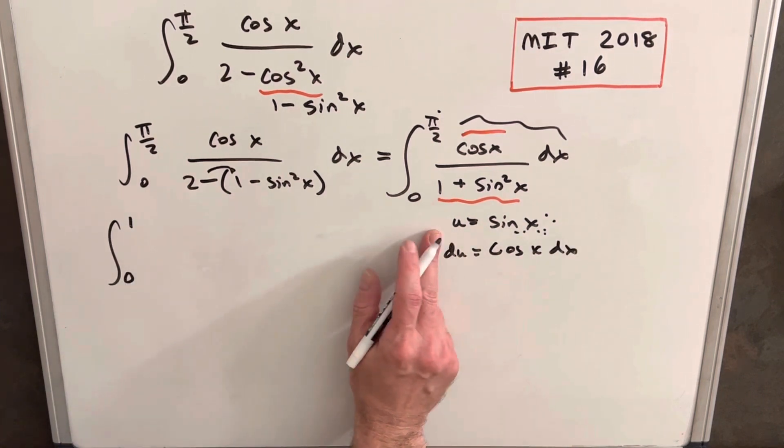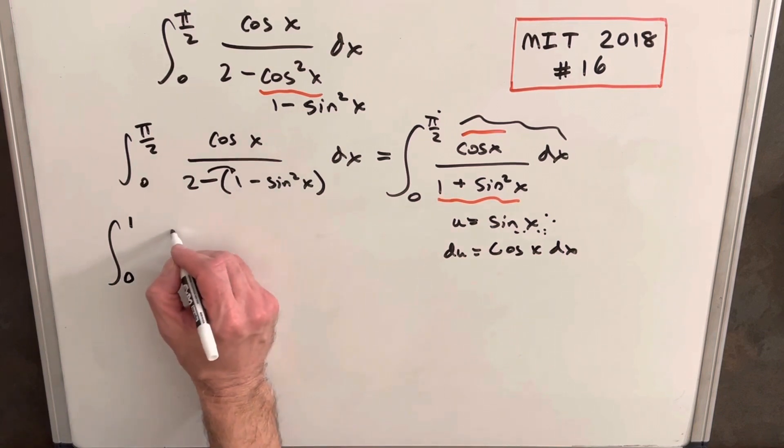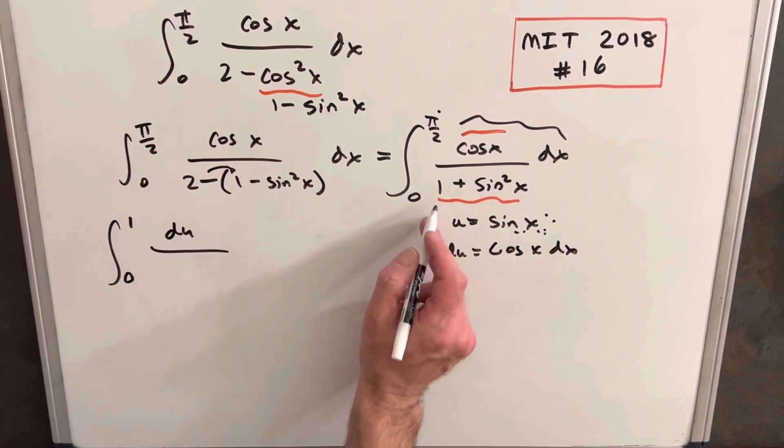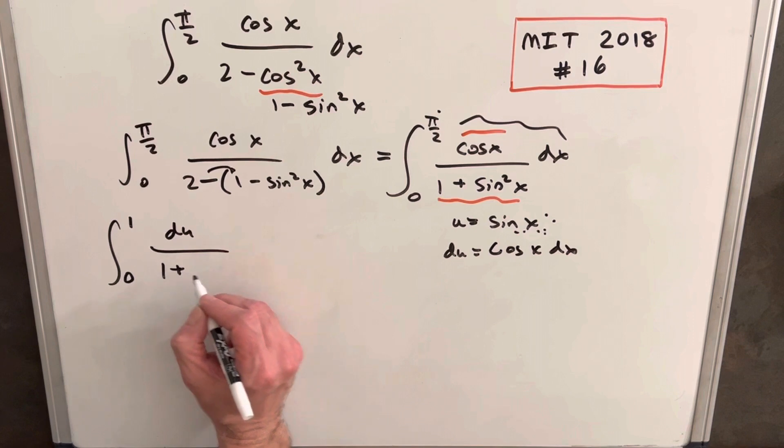We have our bounds, and then we're going to have du in the numerator, and just 1 plus u squared in the denominator. Okay, and this is very familiar.